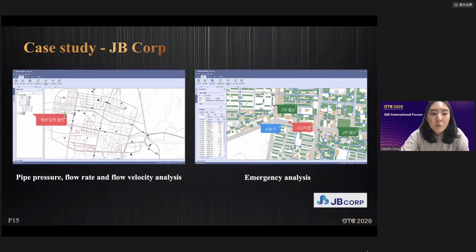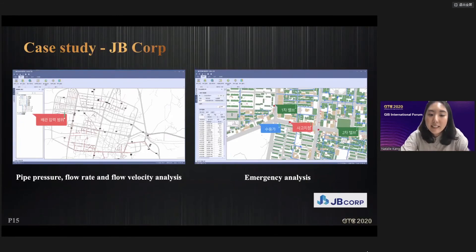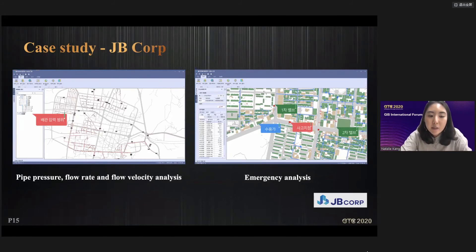Here is a case study from Korea. JB Corporation is one of the major city gas companies. Since using PLUS, pipe flow rate, velocity, and pressure analysis that previously took more than a week has been drastically reduced to two to three hours. This obviously increased work efficiency. Customer satisfaction with PLUS is very high, because it provides an emergency situation analysis function that is twice as fast and more accurate than the existing system.